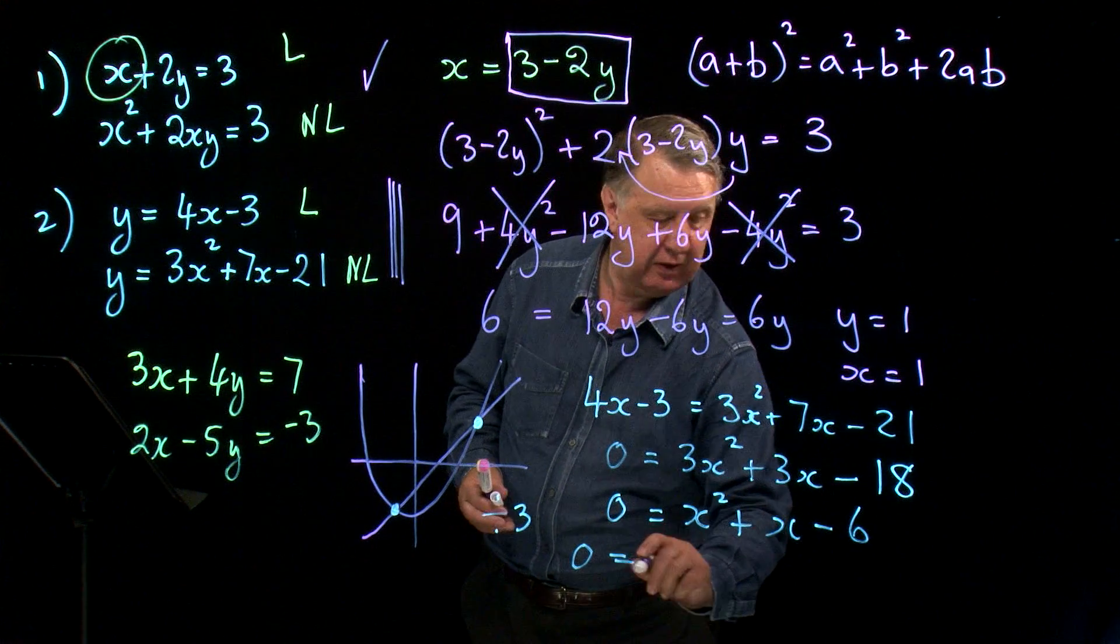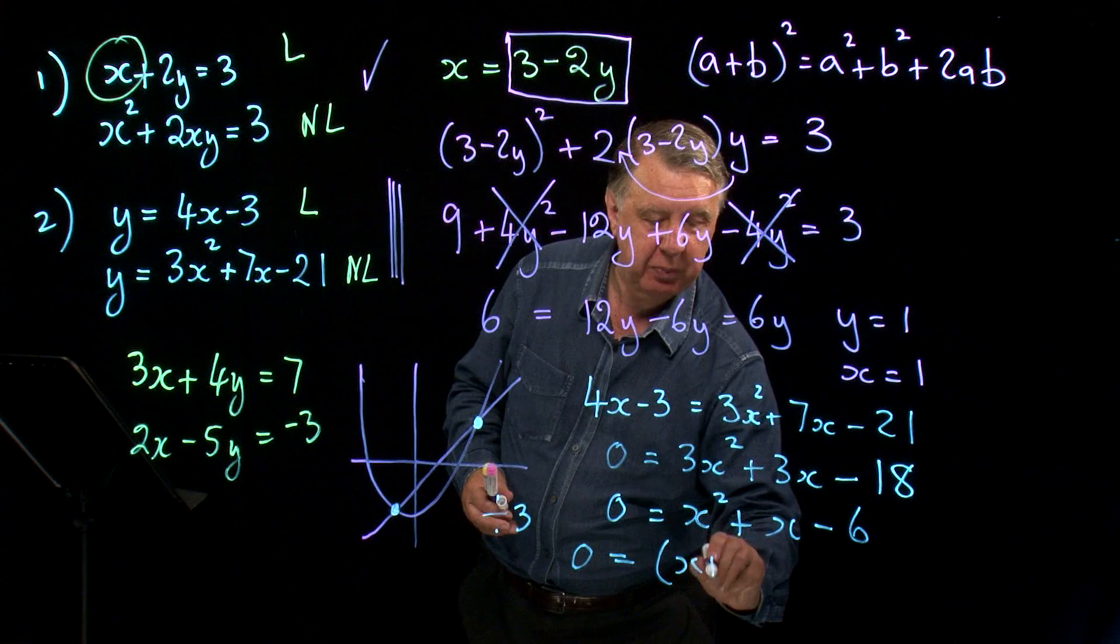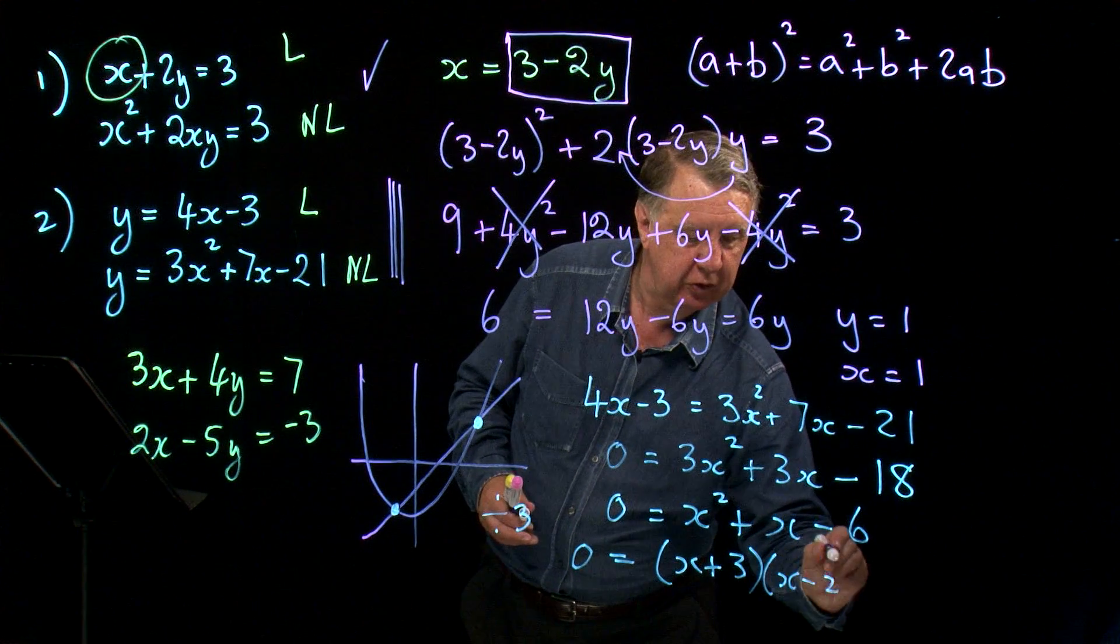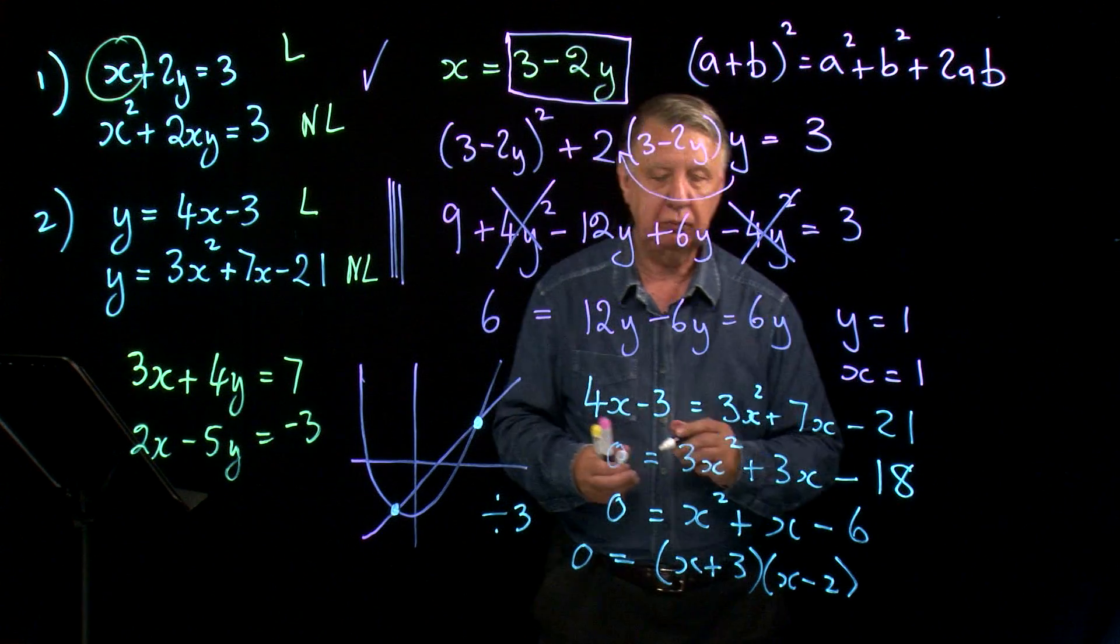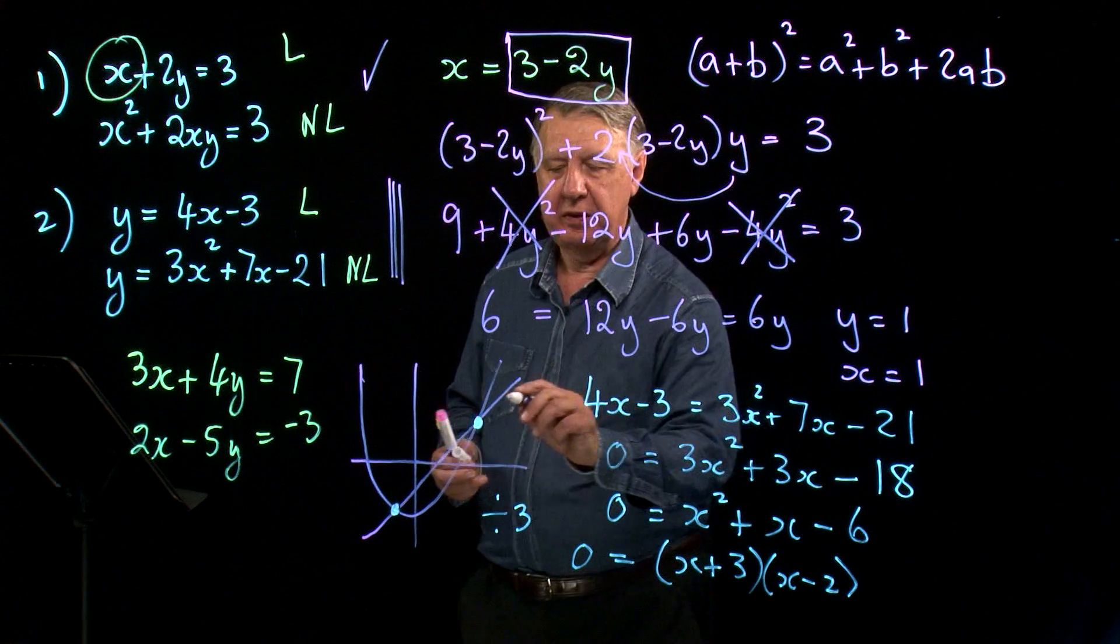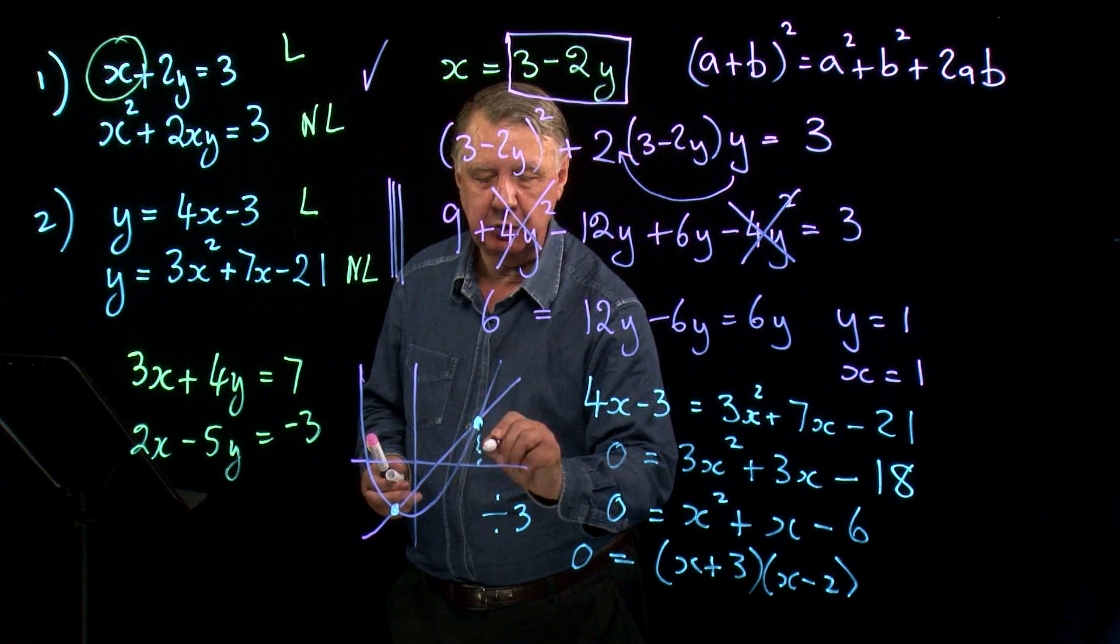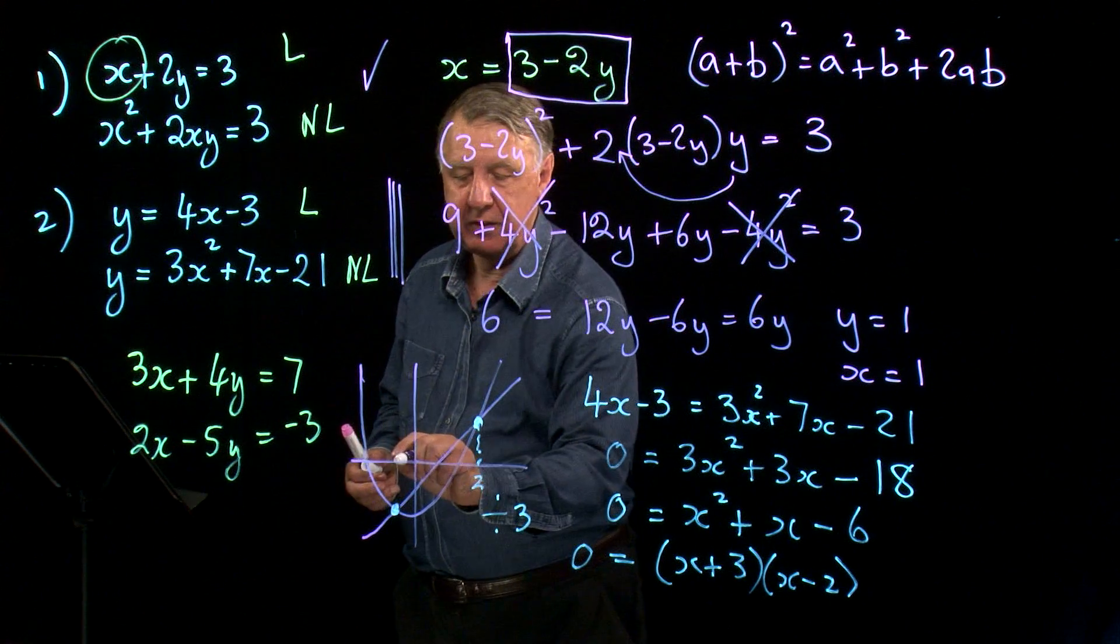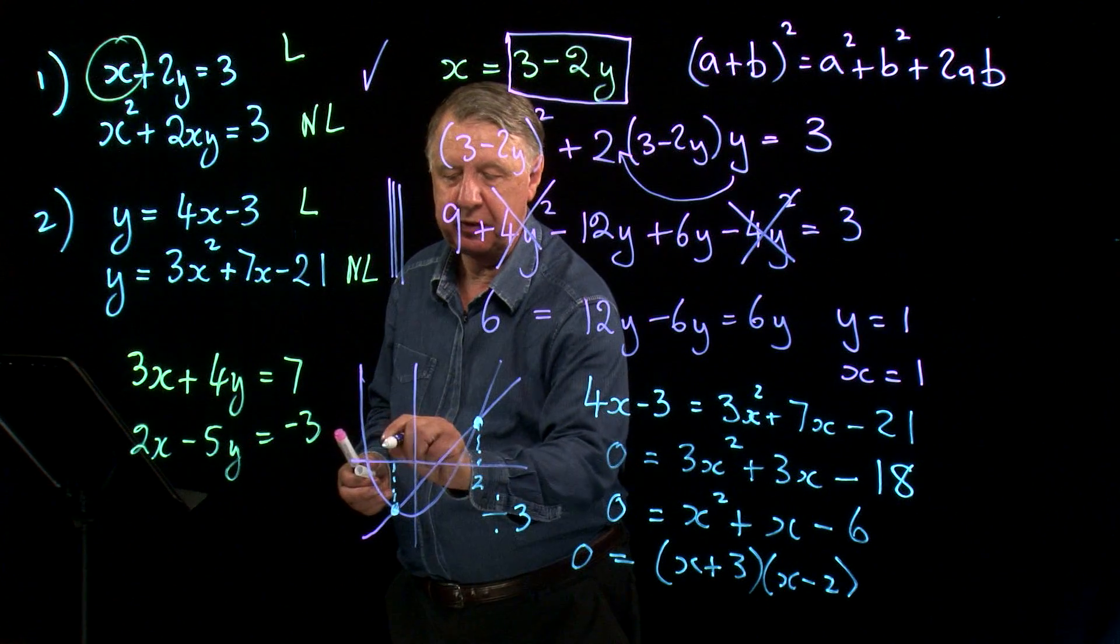So this factorises as (x + 3)(x - 2). So that means that this point here is x equals 2, and the other point is x equals negative 3.